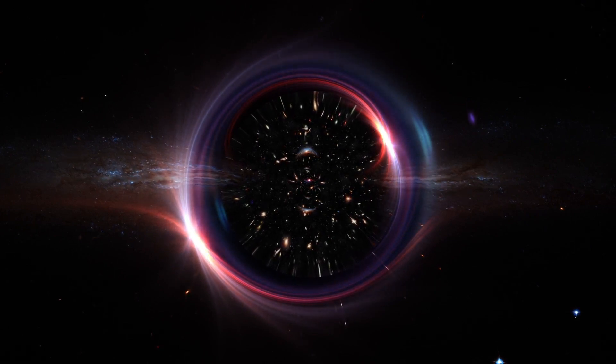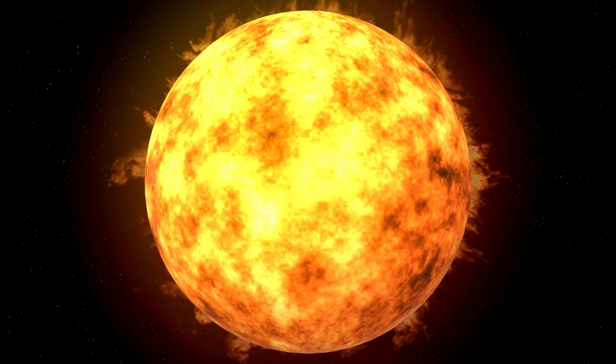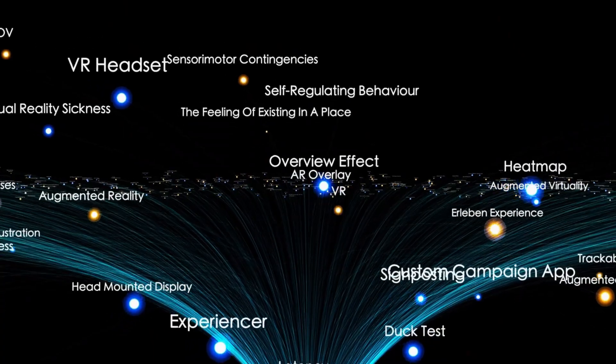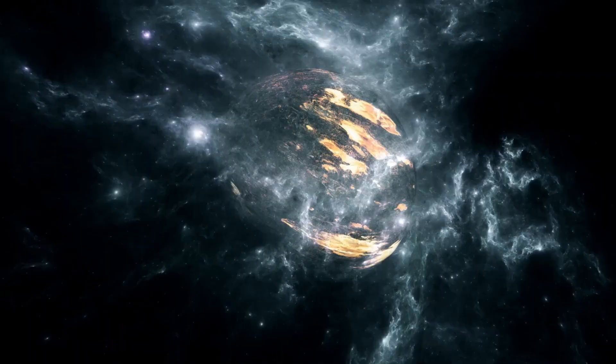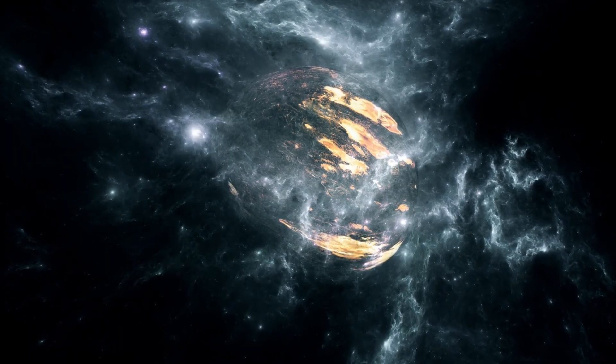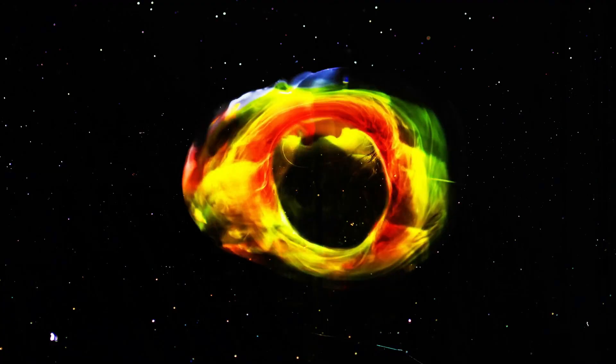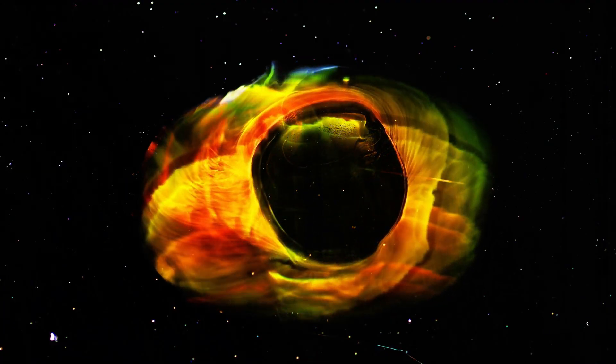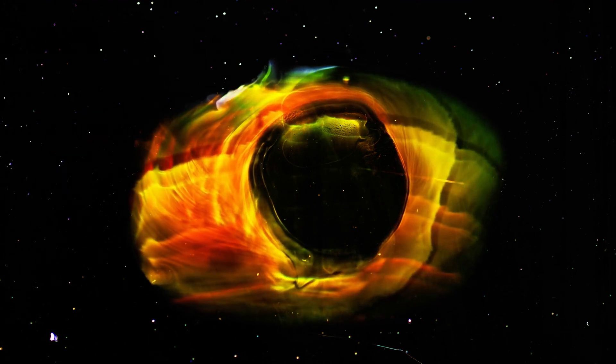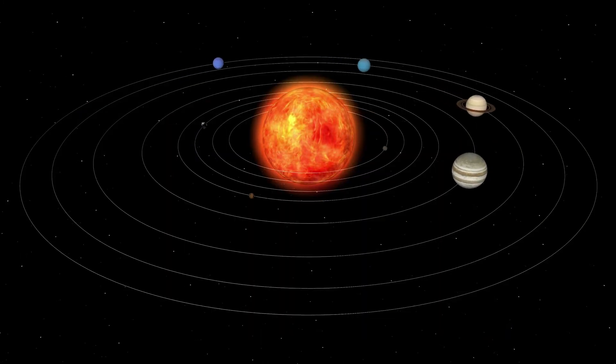Despite its size, Betelgeuse is relatively young. It's about 10 million years old, far younger than our Sun, which is about 4.6 billion years old. But massive stars like Betelgeuse live much shorter lives than smaller ones. They burn through their fuel at a much faster rate, pushing through the stages of nuclear fusion rapidly, and ultimately reaching the end of their lives in just a few million years. And Betelgeuse right now is running low on the fuel that keeps it stable.